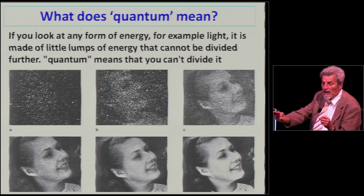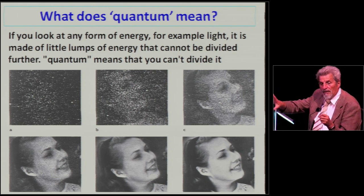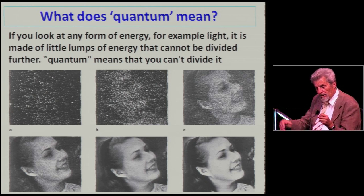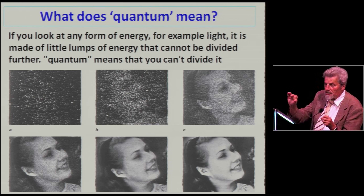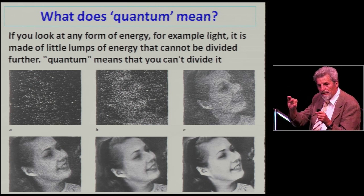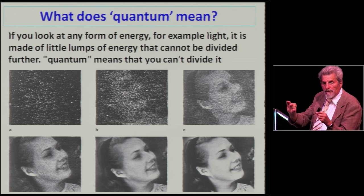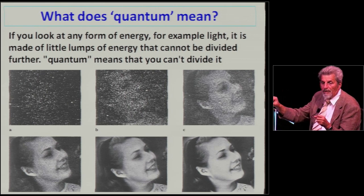As long as the hole is large, we see just the usual thing - the photographic plate gets darker and darker the more time we wait and more light comes and shines on it. But if we make the hole very, very small, suddenly a dramatic thing happens, and instead of seeing just a continuous darkening, we see suddenly one point appear here on the photographic plate.